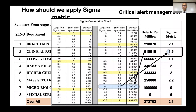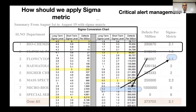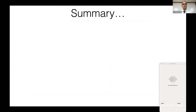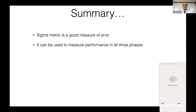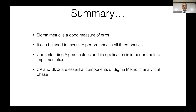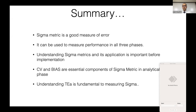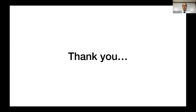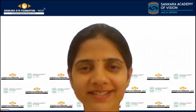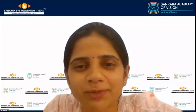For the critical alert manager in post-examination, we measured our sigma and found it was 2.1 — clearly an opportunity for improvement, prompting us to work on improving our post-analytical sigma. In summary: sigma metric is a good measure of error and can be used across all three phases of the laboratory process. Understanding sigma metric and its application is important before implementation. CV and bias are essential components in the analytical phase; understanding Total Allowable Error is fundamental to measuring sigma. Once understood, it is easy to apply.